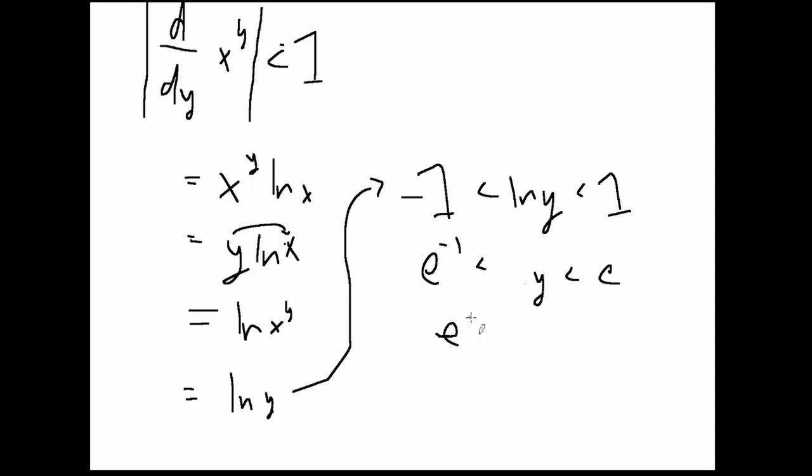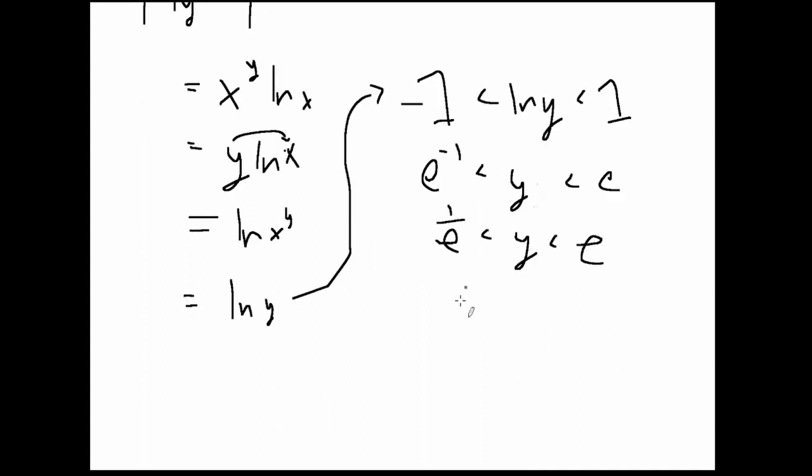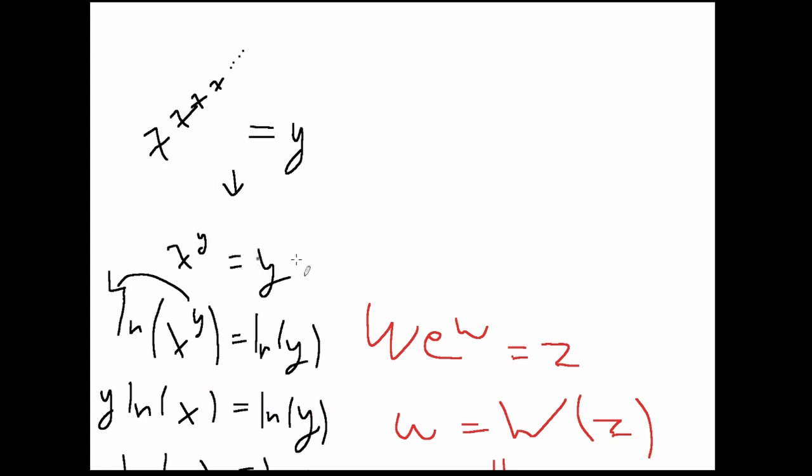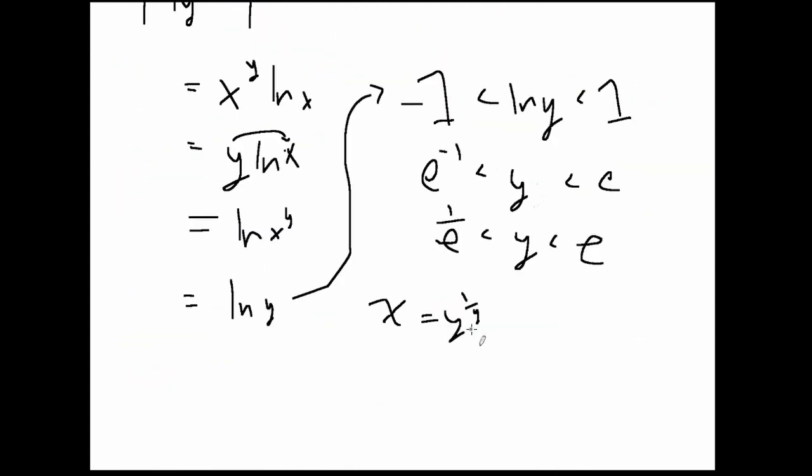And e to the negative 1, that's just 1 over e, y. And here it is. So, here's our solution for y. And we can know x by knowing that x will simply equal y to the power of 1 over y. Based on our original statement, that x to the y will equal y. Just solving for x in this instance. Now, we can do a similar manner right here, in that we can state that e raised to the negative e will be less than x. And it will be less than e to the power of 1 over e.